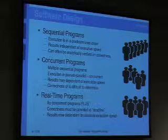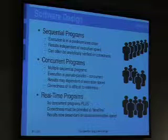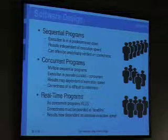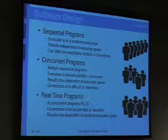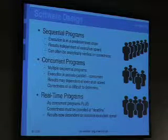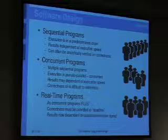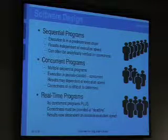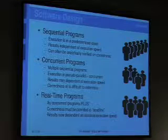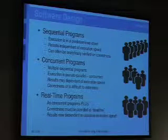In sequential programs, execution is predetermined and the results are independent of the execution speed. It's quite easy to understand, and you can often analytically verify the correctness. Concurrent programs represent the typical situation of today's operating systems — they execute multiple programs in pseudo-parallel. It seems parallel, but it's not really parallel, since there's one CPU giving time slices to different processes.